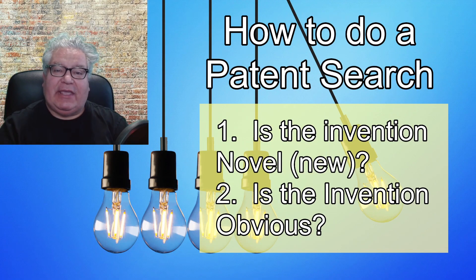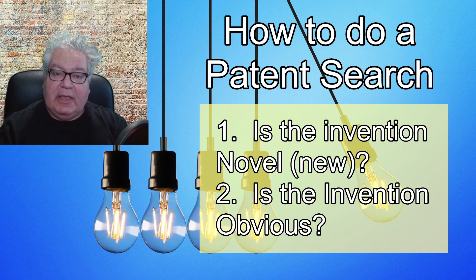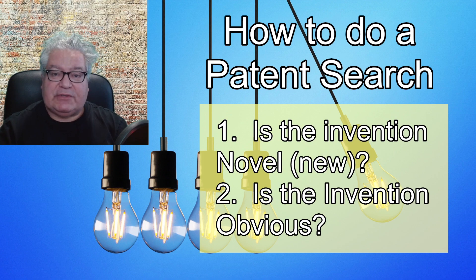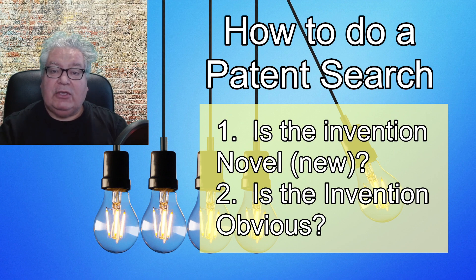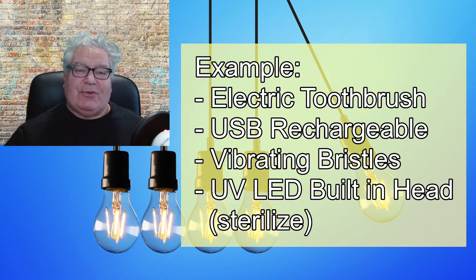Hi everyone, I've got a new video for you today about how to do a patent search, and I'm going to use a specific example to illustrate how you can do that. During the search we're going to find a bunch of references. To assess them, you have to ask yourself two questions: is the invention novel or new in light of the references you find, and is it obvious from those references? When you can answer those two questions, you can determine whether your invention is worth protecting.